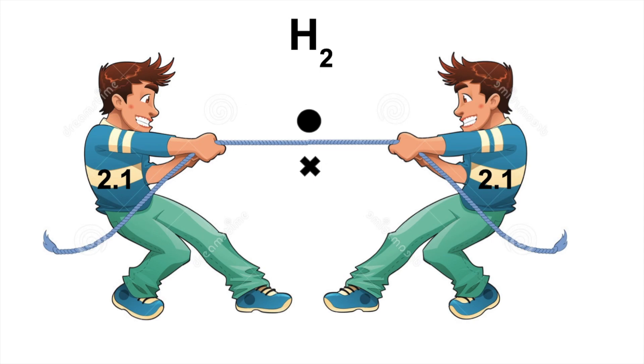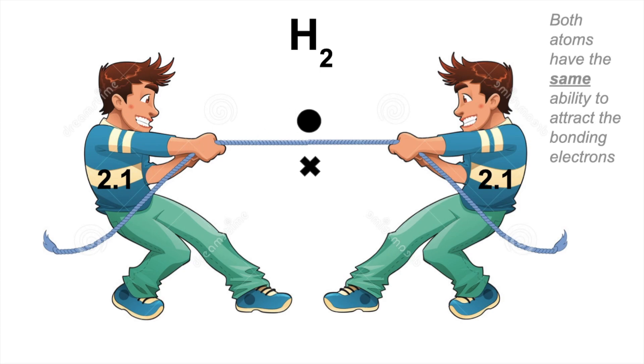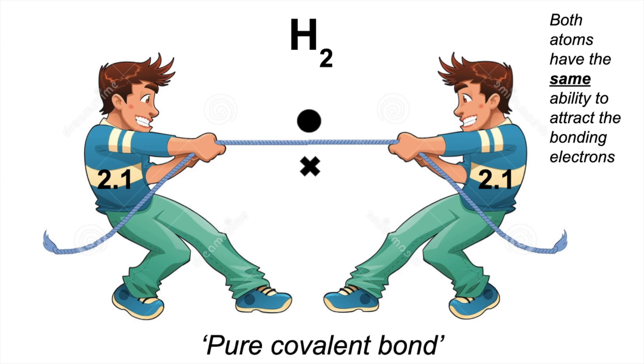In the final part of the video, I'm going to link all of this to bonding types. Remember at the start we said we're assuming all bonding is covalent — well, obviously that's not true. If we think about something like hydrogen, you'll notice we've got identical atoms — both H's — so their electronegativity values are the same: 2.1 each. The attraction from the right-hand hydrogen on the bonding pair is exactly the same as from the left. So both atoms have the same ability to attract the bonding electrons, and this is what we call a pure covalent bond.